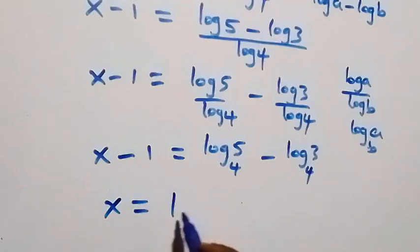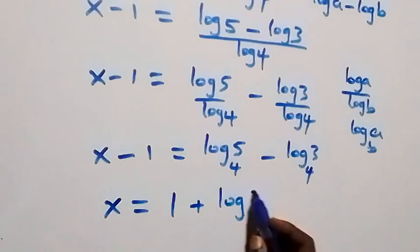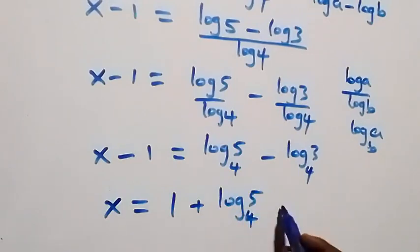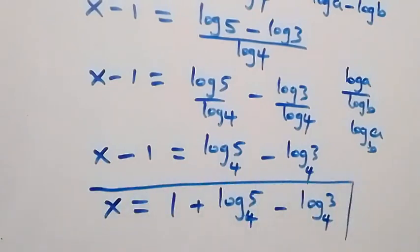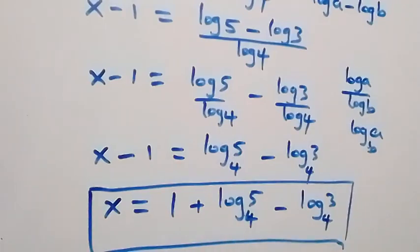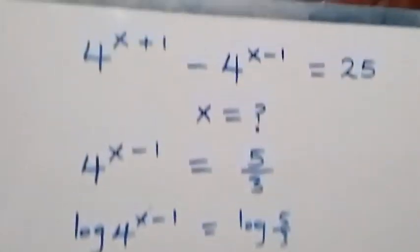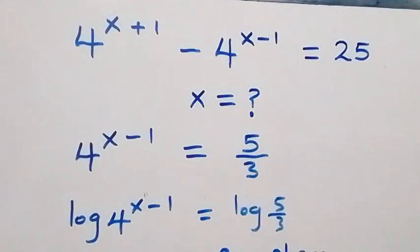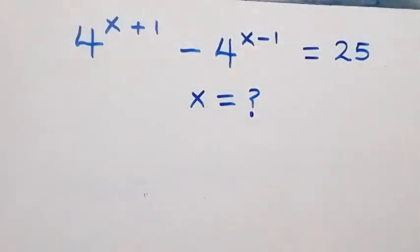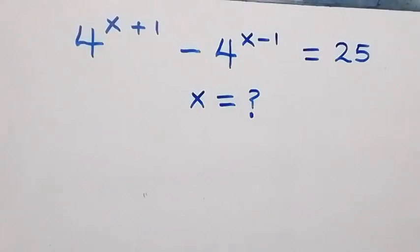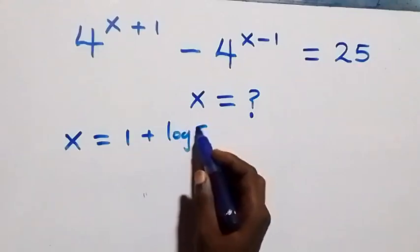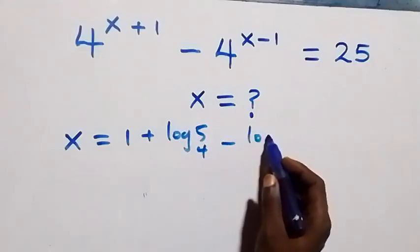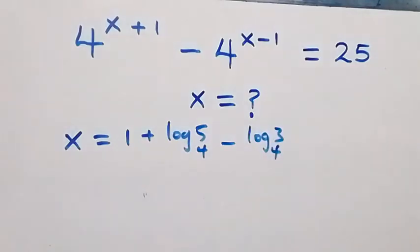Since we are finding x, we take minus one to the other side to become plus one, giving the final answer: x equals to 1 plus log 5 to base 4 minus log 3 to base 4. We can also verify that this answer satisfies the original equation.